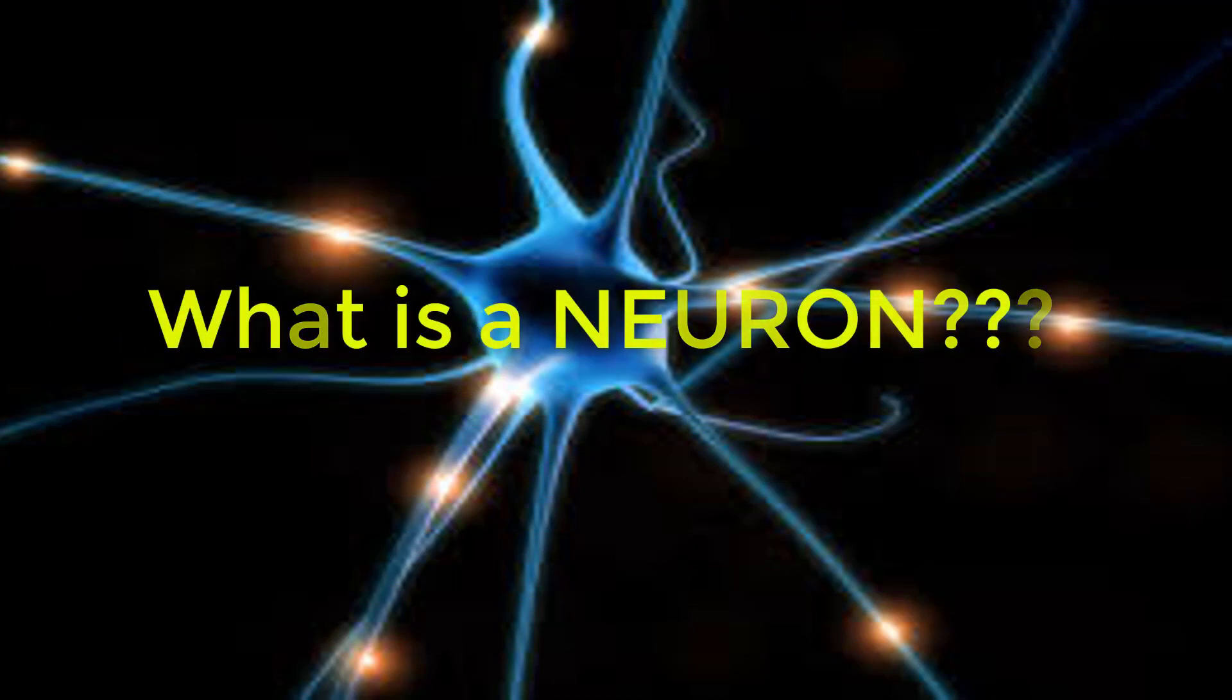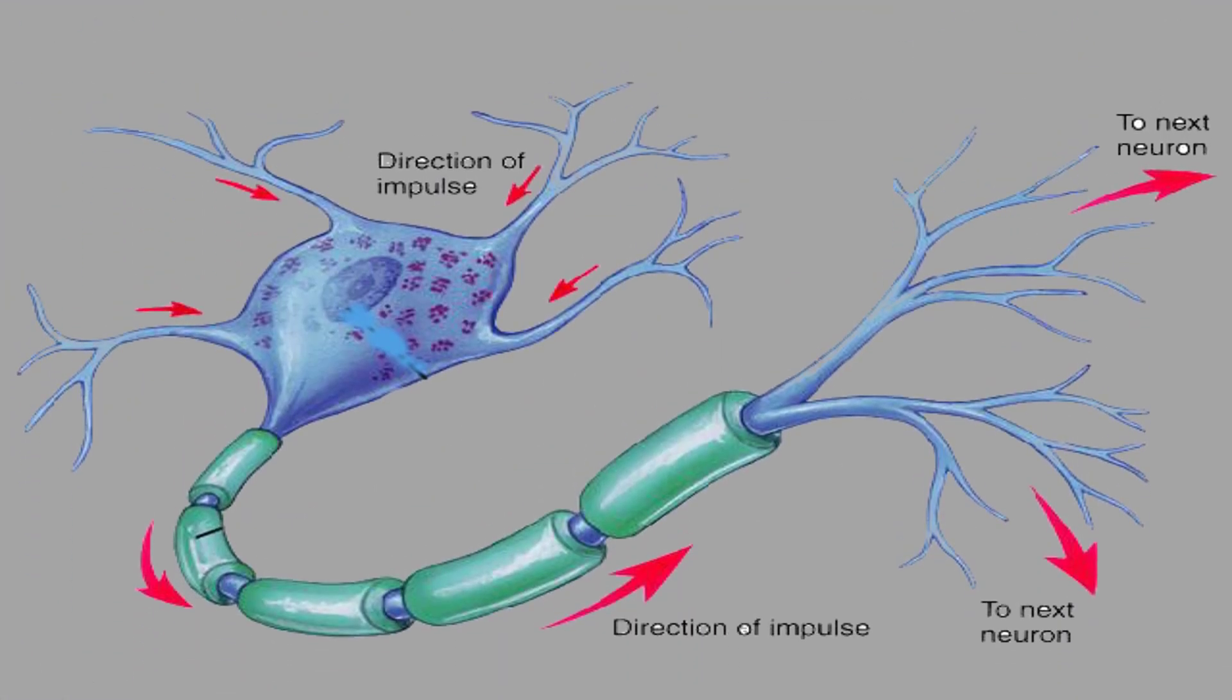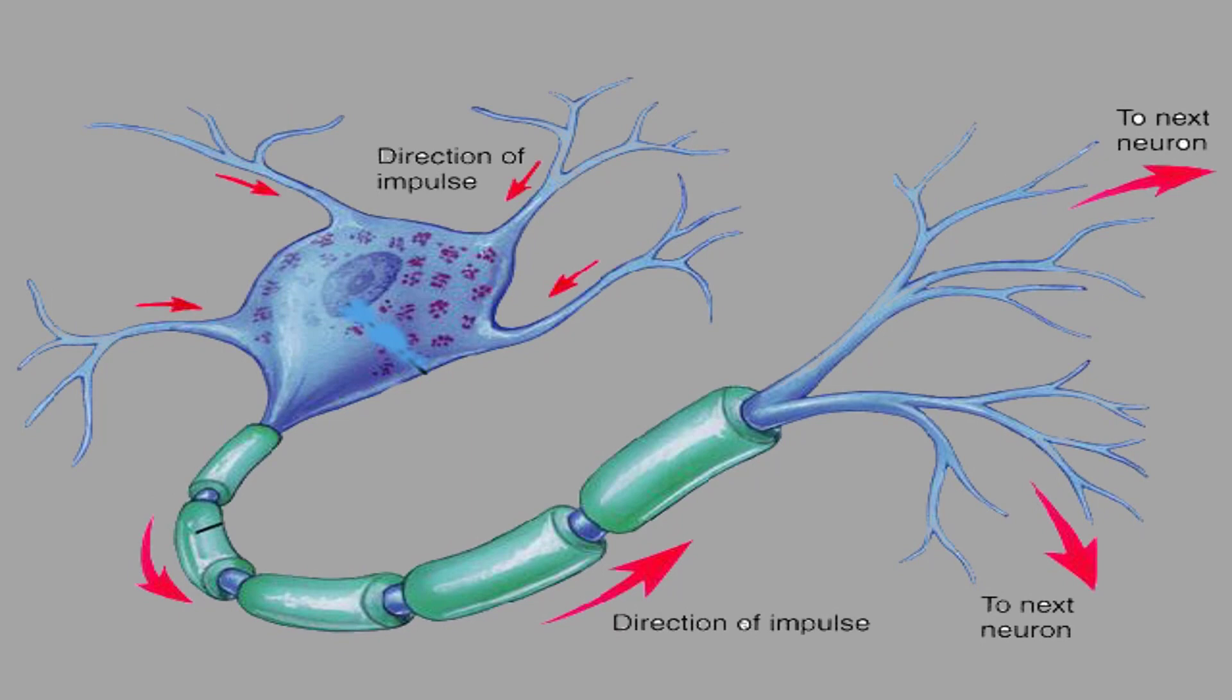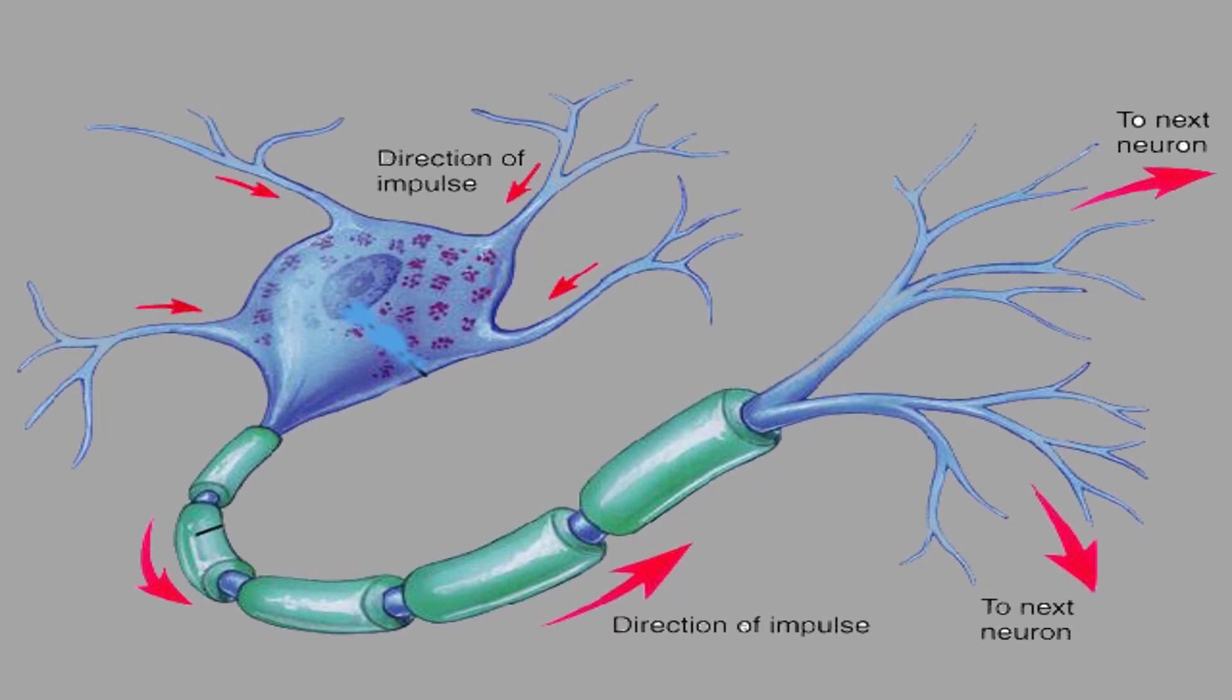A neuron is the working unit of a brain. It is a cell that has been designed specifically to transmit information. A neuron can send signals to either another neuron, a muscle, or even a gland cell.